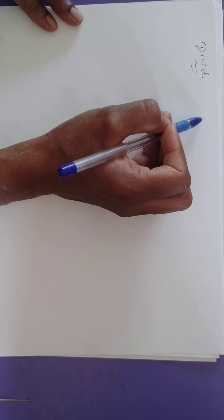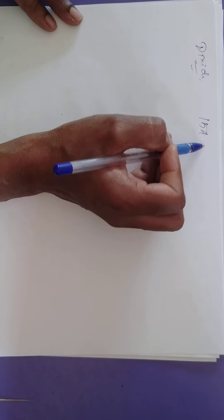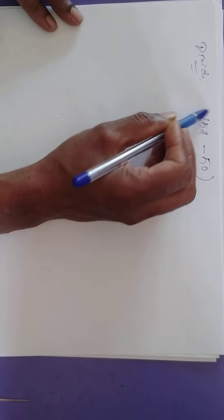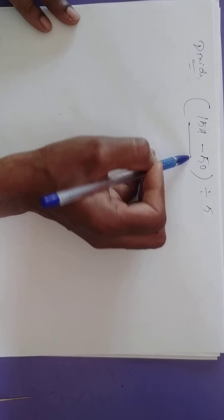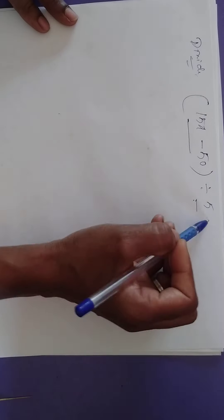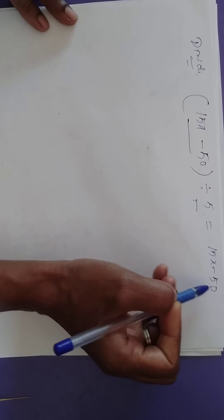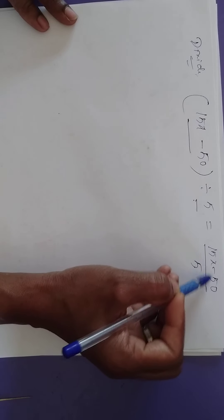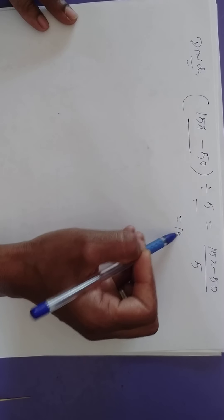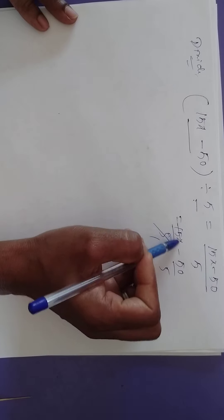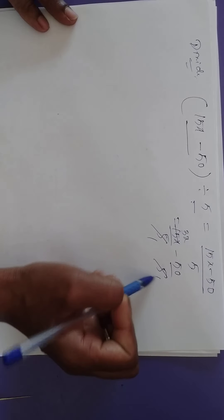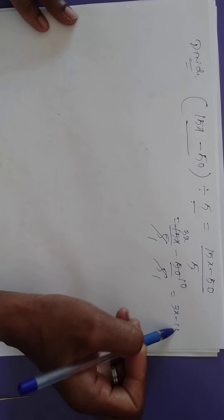Next, division. Divide 15x minus 50 by 5 — a binomial divided by a monomial. Write it as 15x minus 50 by 5. The denominator 5 belongs to both numerator terms: 15x by 5 minus 50 by 5. 5 threes are 15, 5 tens are 50 — so it equals 3x minus 10.